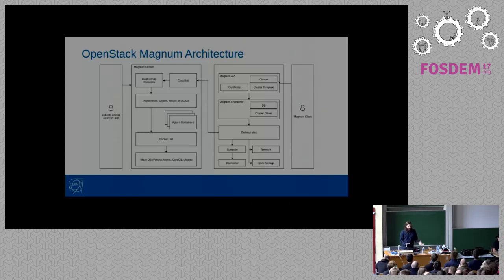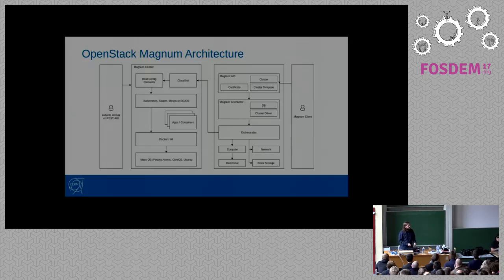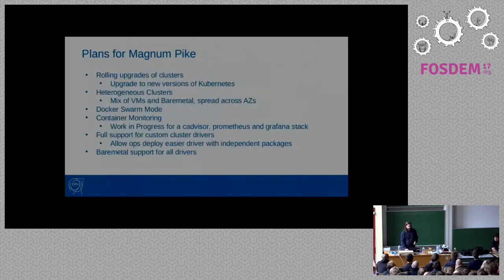This is the architecture of the service. On the right side of the screen we have the Magnum user that creates a cluster, which uses a special cluster driver. If you are an operator, you can customize your driver and do modifications of how Kubernetes or Docker is deployed. The orchestration service — Heat in OpenStack — creates the cluster. We pass our scripts with cloud-init inside the nodes, master nodes and worker nodes, and deploy the service. On the left side of the screen, we have the native API of Kubernetes or Docker, so we can use the tools or directly the REST API.